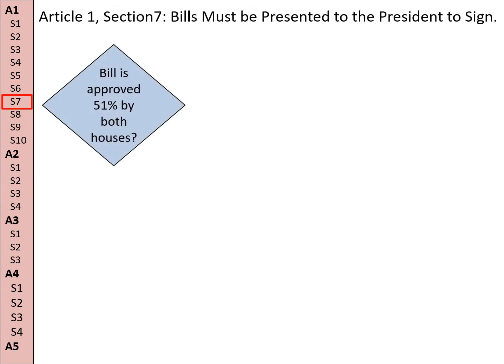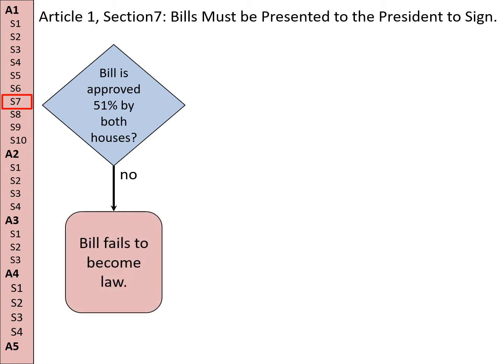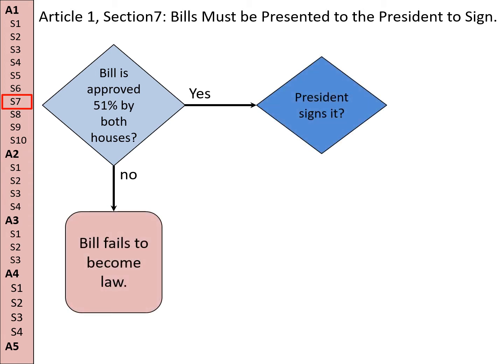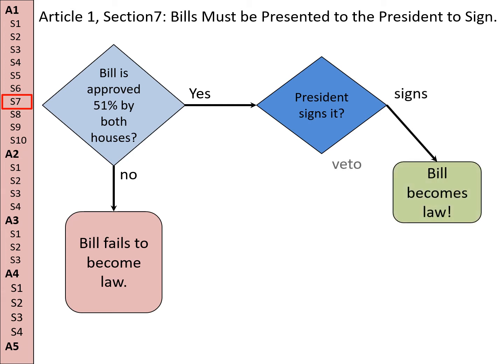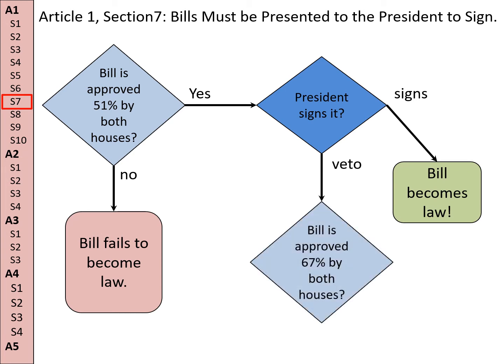Section 7: Bills must be presented to the President to sign. A bill is on its way to becoming law, and if it's approved by 51% of both houses and then goes to the President, he signs it and it becomes law. But if he vetoes it, it goes back to Congress. If Congress can approve it by 67%, or two-thirds of both houses, then it still becomes a law even though the President vetoed it. However, if they can't get that two-thirds vote, the bill fails to become a law.